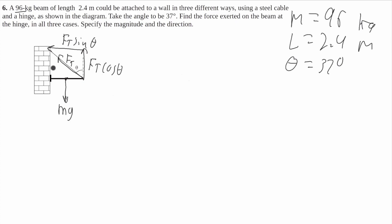And now we have to worry about the hinge force. First we're going to decide if it's going to be right or left. We know that the forces are going to have to balance in the x. We see that this tension has a component that goes to the left. So we know this beam is not going to get pushed into the wall, so this hinge is going to have to push to the right. So we know this hinge force is going to be to the right.